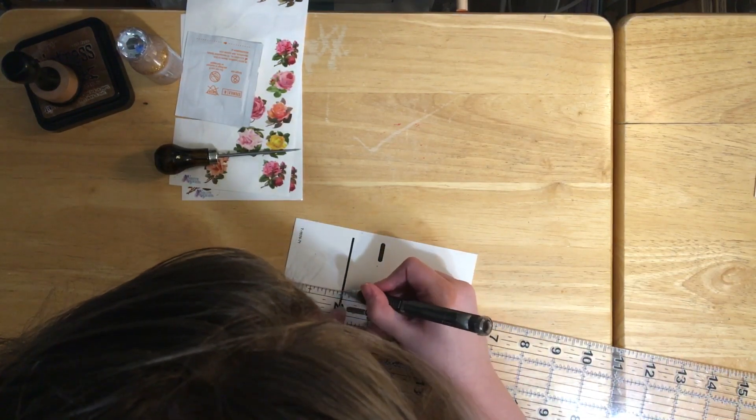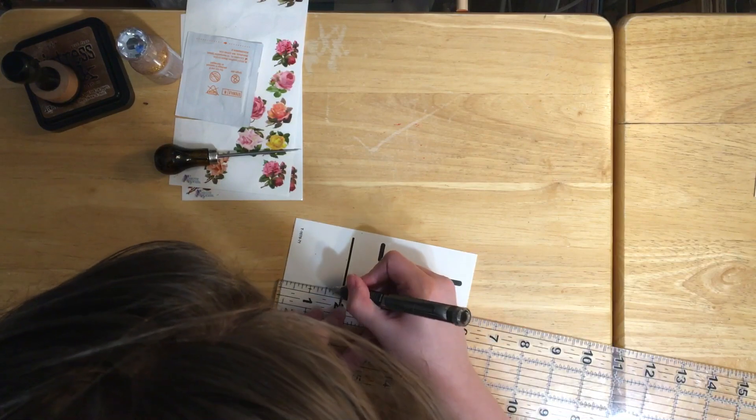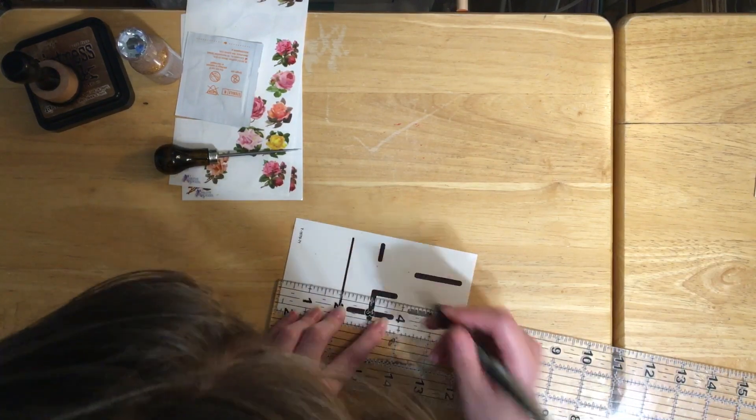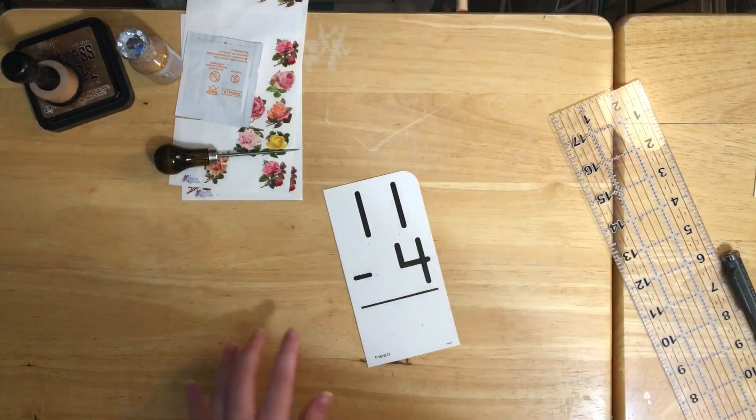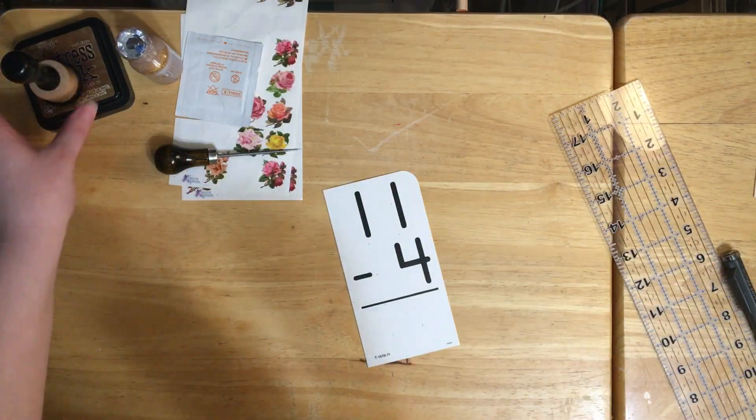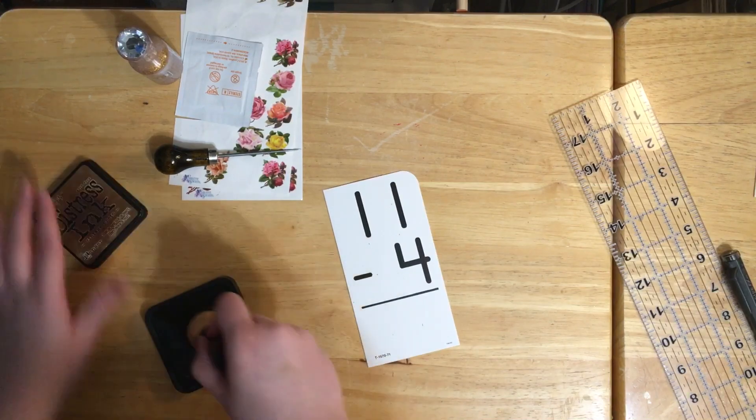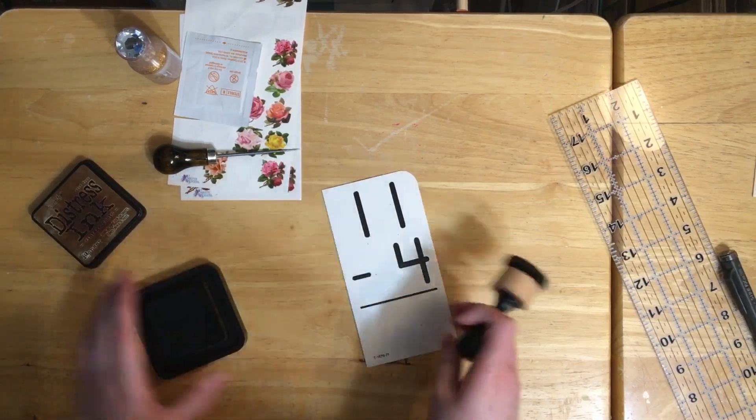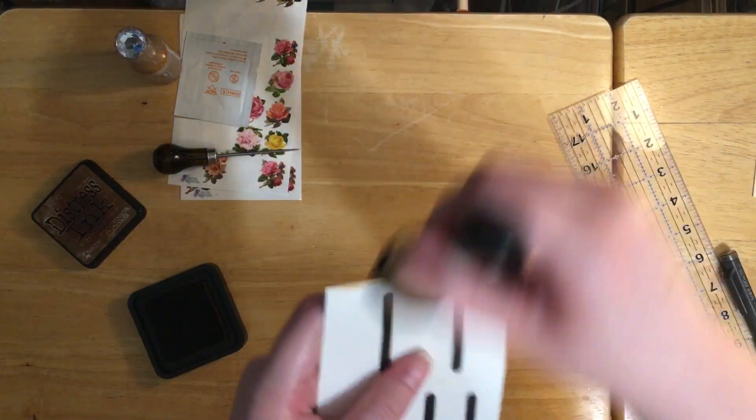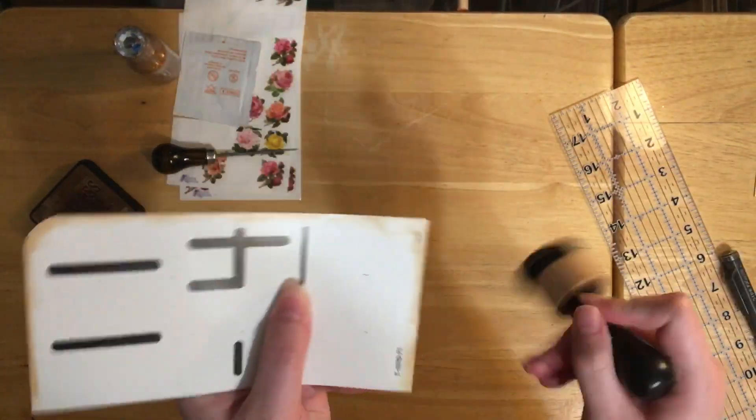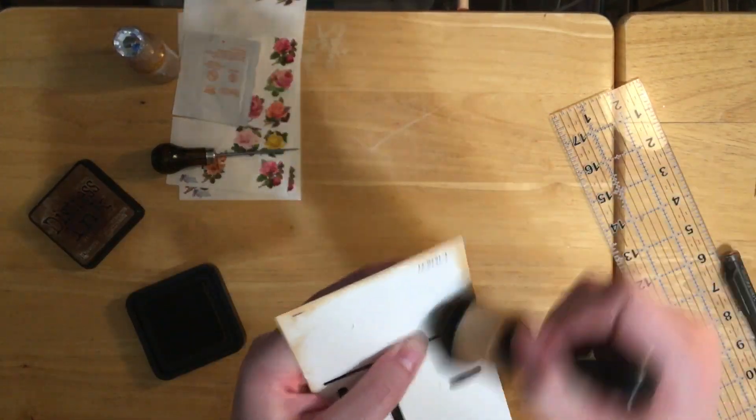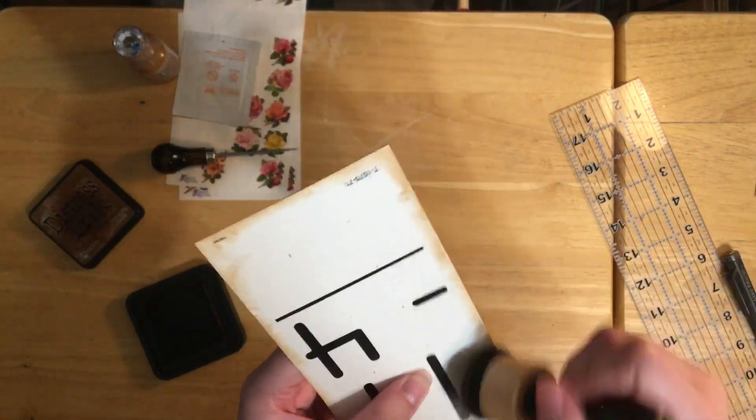I'm running into issues being able to see my lines on this one. Next I'm gonna go ahead and ink it with some distress ink, going all the way around it.